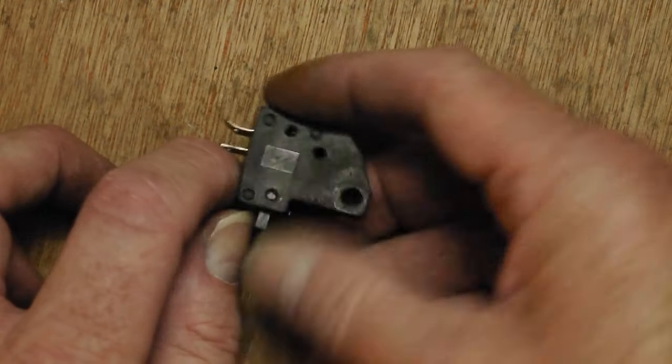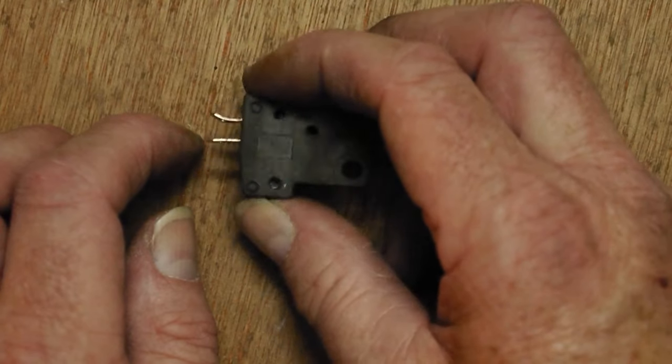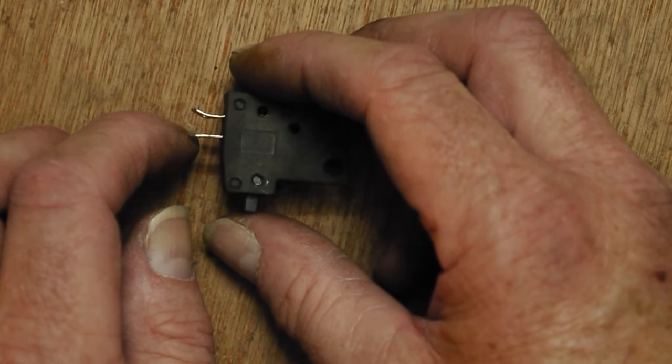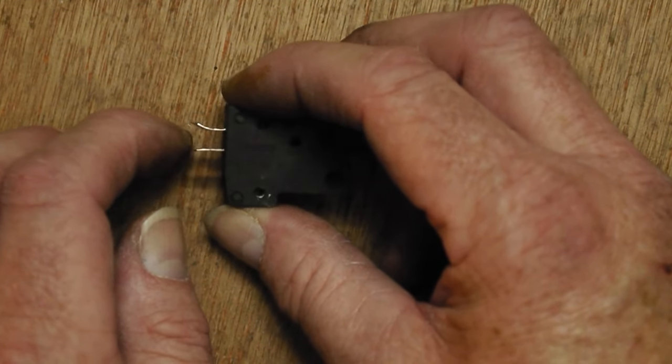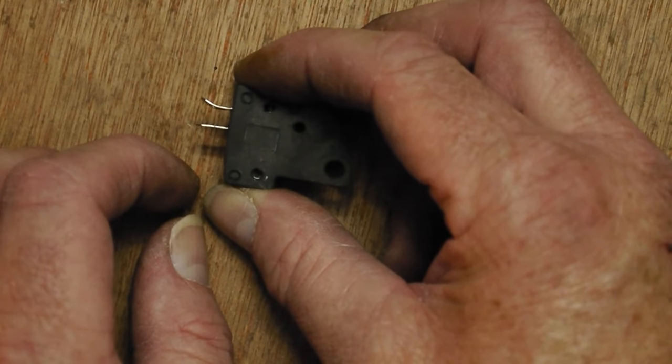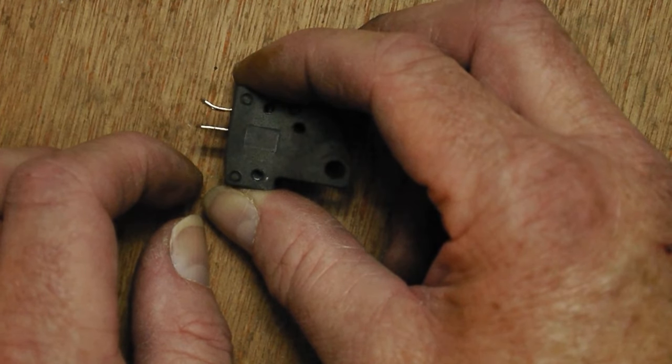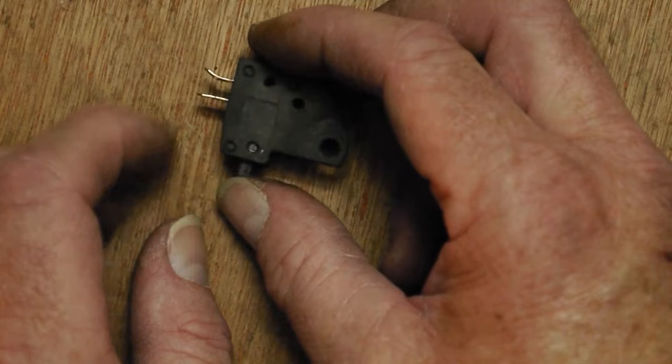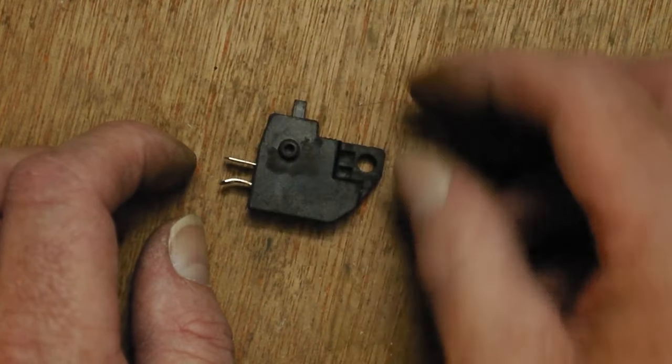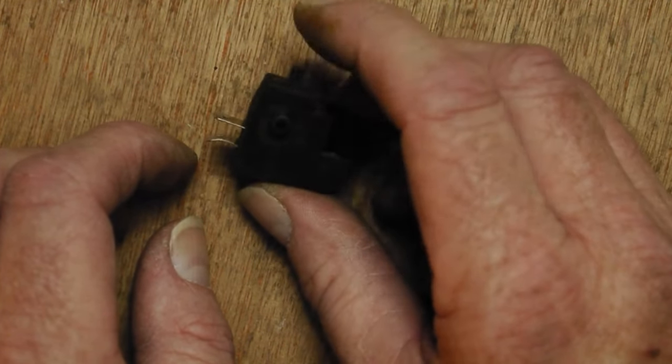It's quite an interesting switch because it looks like a normal push-to-make switch, but it's actually a push-to-break switch. So normally when the front brake lever isn't being pulled, the switch is held in. Then when you pull it, it actually makes the contacts, and the light comes on at the back of your motorbike.